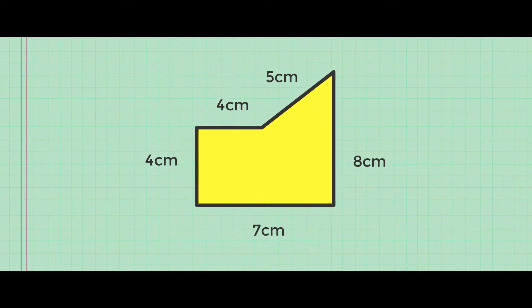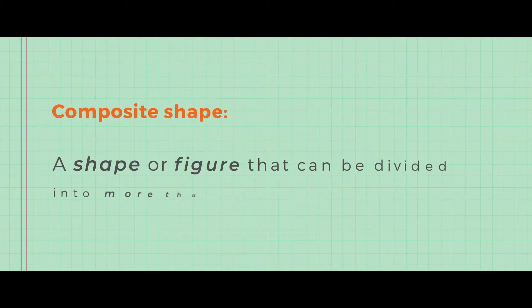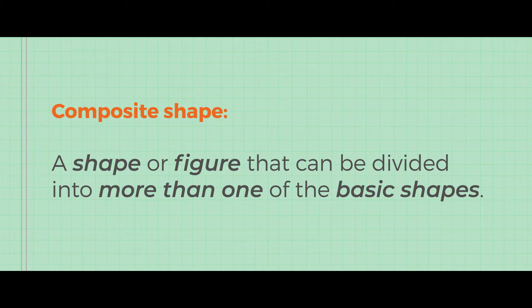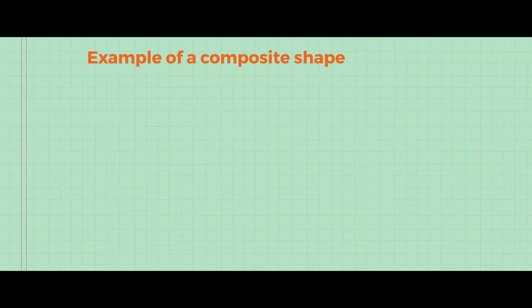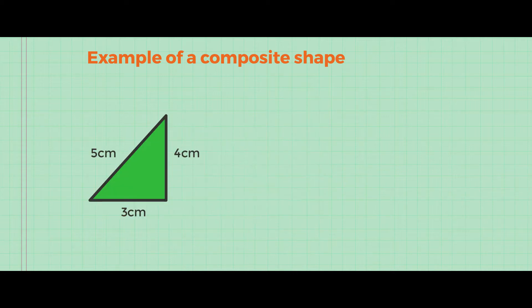To begin with, I am going to present you with a simple composite shape and how to calculate its area and perimeter. Let's look at the definition and examples of composite shapes. A composite shape is a shape or figure that can be divided into more than one of the basic shapes. Looking at our example diagram, if we break this composite shape into two, we get a triangle and a rectangle.